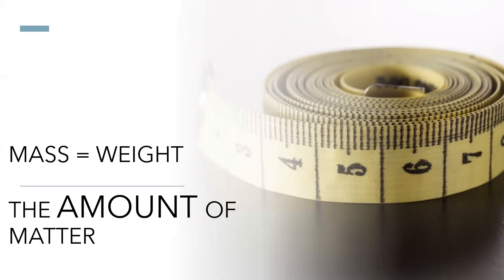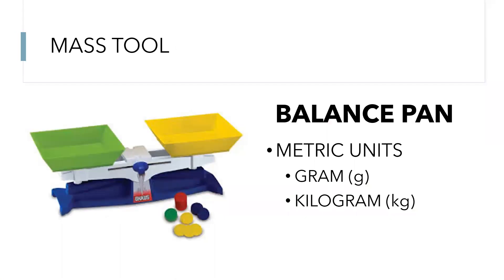Next is mass. Mass is the amount of matter that you have. To make it a little easier, mass equals weight — how much does your water bottle weigh, or how much do you weigh as a person? The tool we will be using in class is called a balance pan, where you put objects on one side and objects on the other side to identify which one weighs less and which one weighs more. The metric units you would use are grams and kilograms.